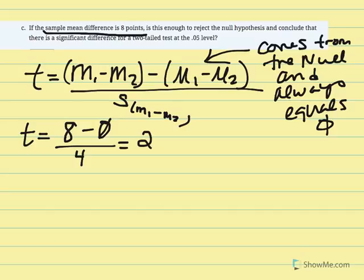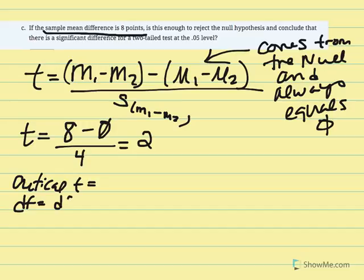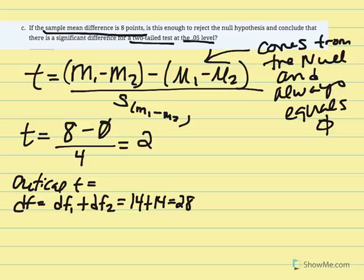We get a t-statistic equal to 2. To determine if that's statistically significant, we need to find the critical t using our degrees of freedom. For two independent samples, degrees of freedom equals df1 plus df2. Each sample was 15, so each df was 14, giving us 28 total. We'll use a two-tailed test at alpha 5% and look up the critical t in the t-distribution table.